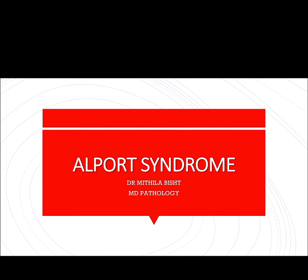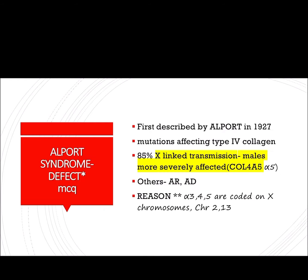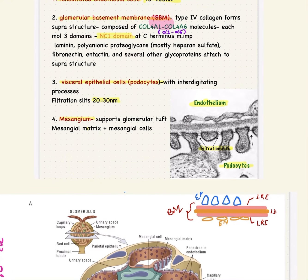Hello everyone. Continuing with renal pathology, I am taking the important topic of Alport syndrome. Questions — MCQs, problem-based questions, and theory questions — can come from this topic. Alport syndrome is a part of hereditary nephritis. These are a group of kidney diseases in which there are mutations in the genes encoding for collagen, which forms an important part of the glomerular basement membrane. There are two diseases in hereditary nephritis: Alport syndrome and thin basement membrane nephropathy, which is the most common cause of benign familial hematuria.